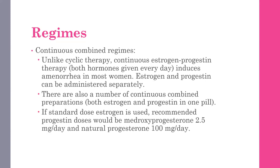Moving on to the continuous combined regime where both drugs are given continuously. Unlike cyclic therapy, continuous estrogen and progesterone both given every day induces amenorrhea in most women. They can be administered separately or as combined preparations in one pill. With standard dose estrogen, recommended progesterone doses are medroxyprogesterone 2.5 mg per day and natural progesterone 100 mg per day.